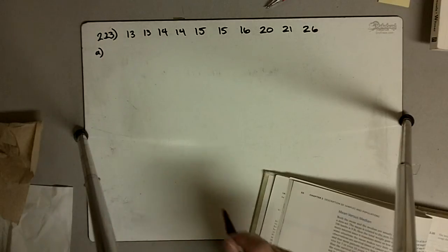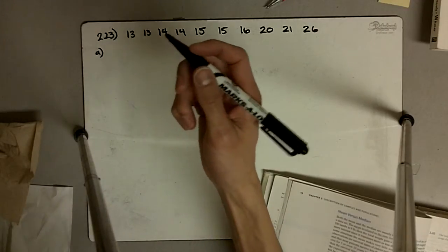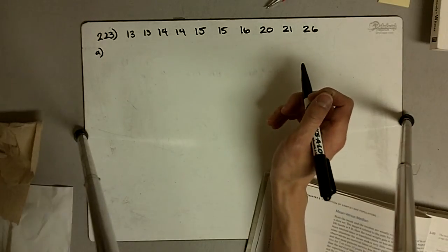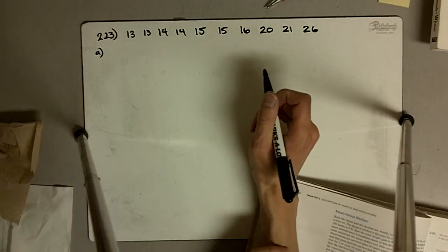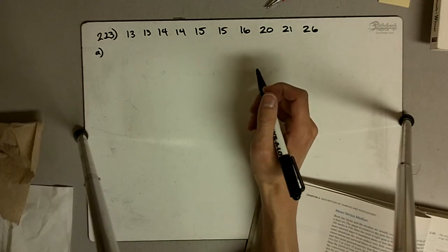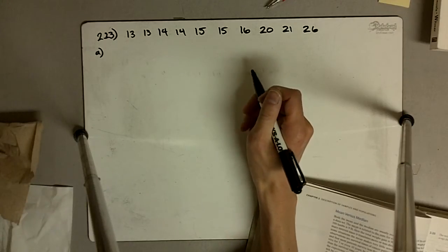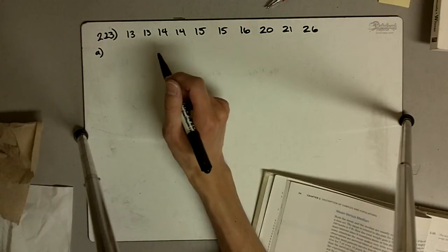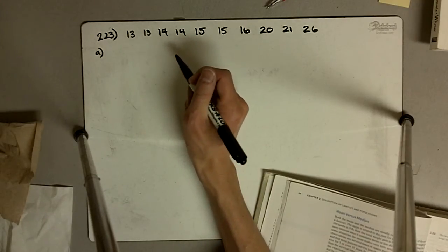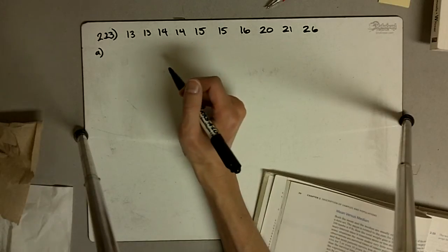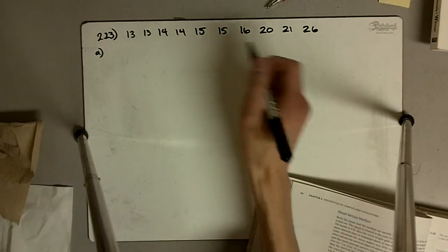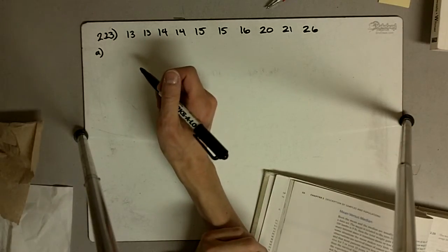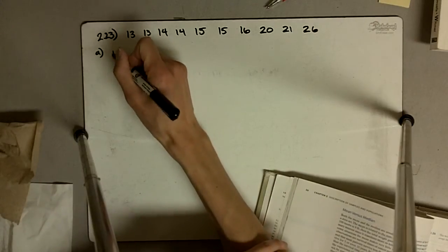Part A asks us to create a frequency distribution and display it as a histogram. We have numbers that range from 13 to 26, essentially a difference of 13 points. To create a frequency distribution, we need to create several bins and measure the frequency of how often a number fitting in that bin shows up in our data set. There's no exact rule, but we can create three bins of size 5 or five bins of size 3 for complete coverage. I'll do it in two different ways.